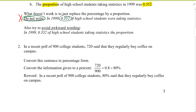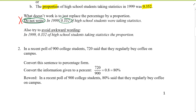Let's do example two. In a recent poll of 900 college students, 720 said that they regularly buy coffee on campus. First, I need to convert this to percentage form. Percentage means per 100, but right now I don't have per 100 — the total is 900. So out of 900, 720 of them regularly buy coffee on campus.